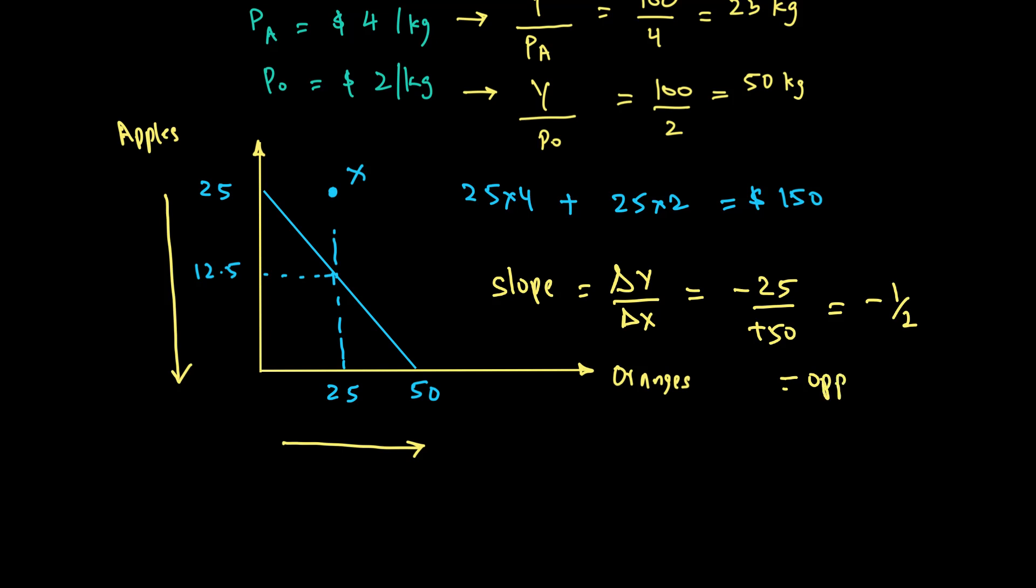Now what does that slope represent? It represents what we call opportunity cost. In other words, it's telling us for every given orange, how much apple do I sacrifice. In this case, for every one orange you sacrifice half of an apple. We can also rewrite this opportunity cost in general form as the opportunity cost of good X in terms of good Y.